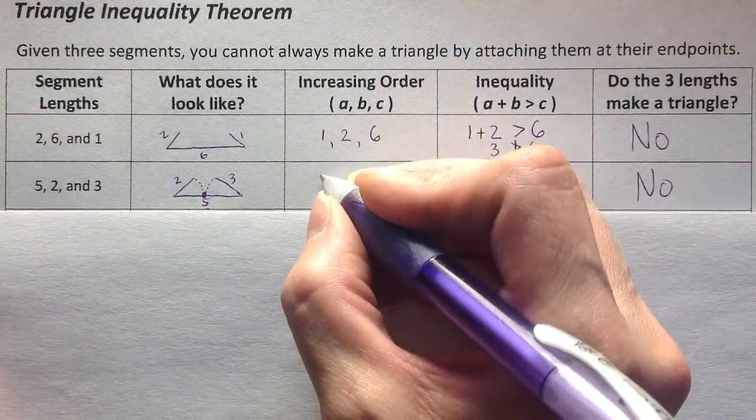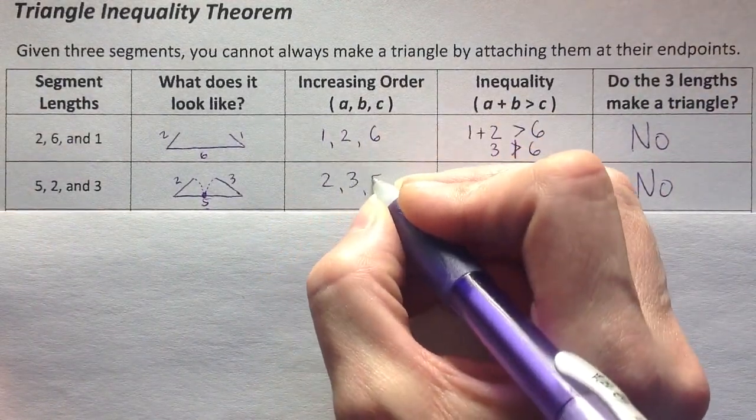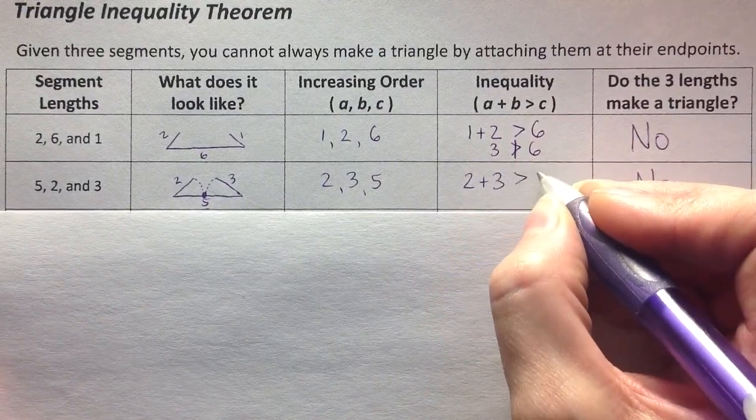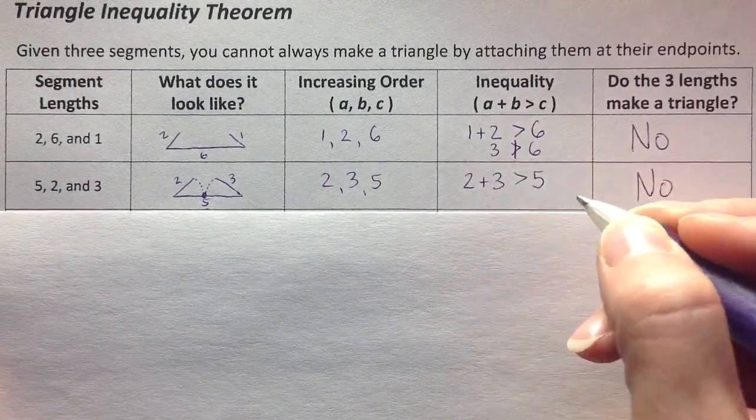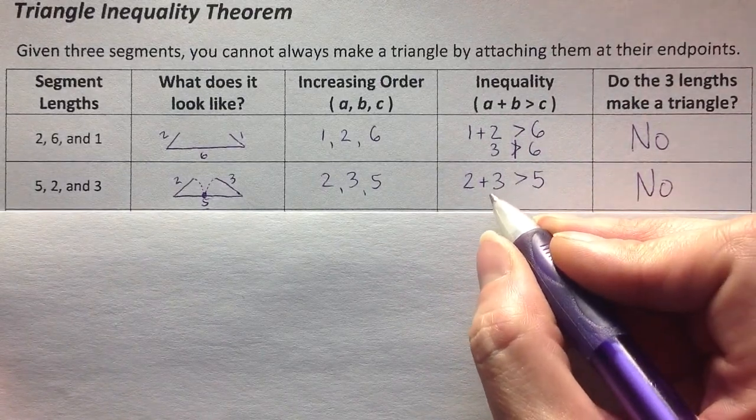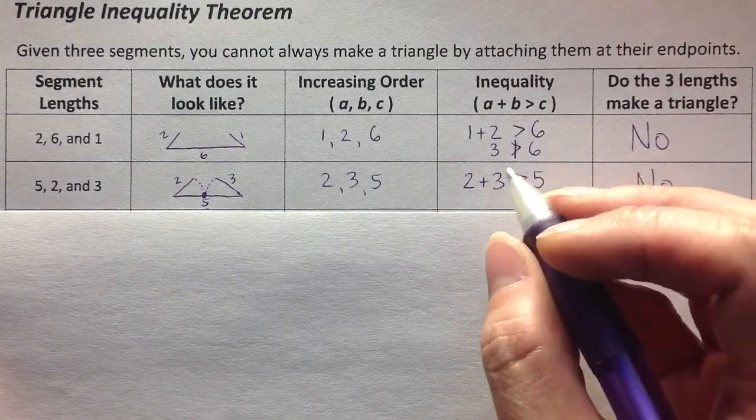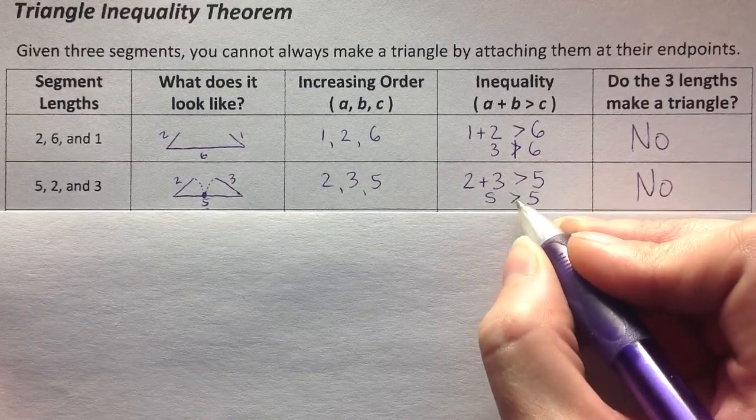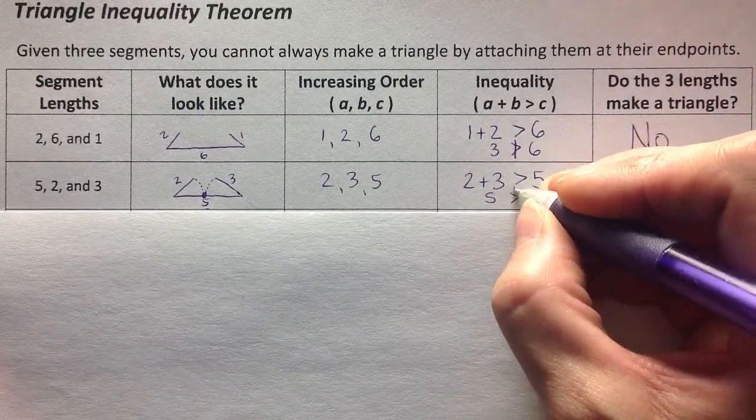Let's look at the math. Put them in order, 2, 3, 5. Add the two shorter ones, 2 plus 3. They're going to have to be not only big enough to touch, but they have to be big enough to create that space to make a triangle. If I add 2 and 3, I got 5. So they were equal, but it was not greater than 5, so that didn't work.